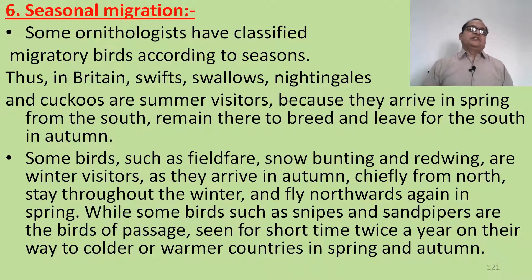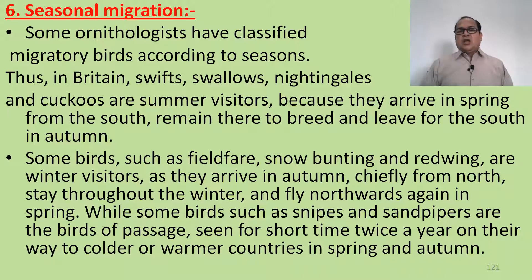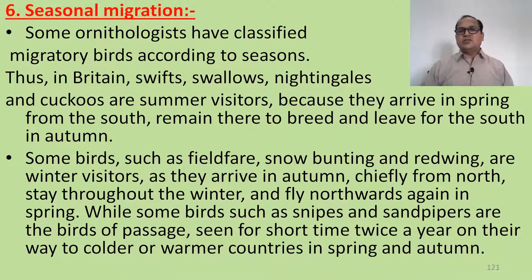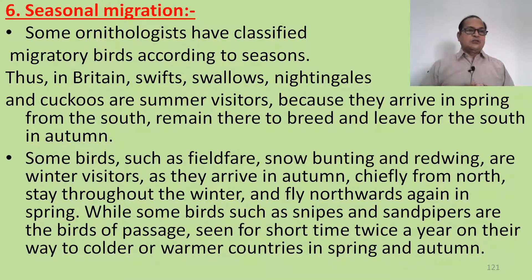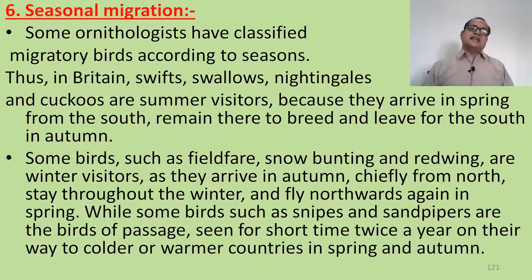The sixth type is seasonal migration. As the name suggests, migration occurs according to the season. Some ornithologists have classified migration according to season. In Britain, swift, swallow, nightingale, and cuckoo are summer visitors — they arrive in spring from the south and remain to breed, then leave for the south in autumn. Some birds such as the fieldfare, snow bunting, and redwing are winter visitors, as they arrive in autumn chiefly from the north, stay throughout winter, and fly northward again in spring.